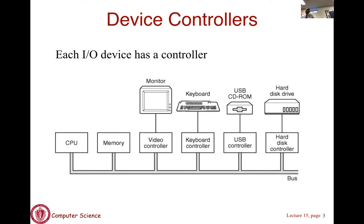Here is a slightly modified version of the picture we have seen before. We have the processor, memory, and system bus, and now looking at the IO devices themselves, we can see there are a number of them. Each IO device actually has a controller, and then there's the device itself. All communication with the IO device actually happens through the controller for that specific device.